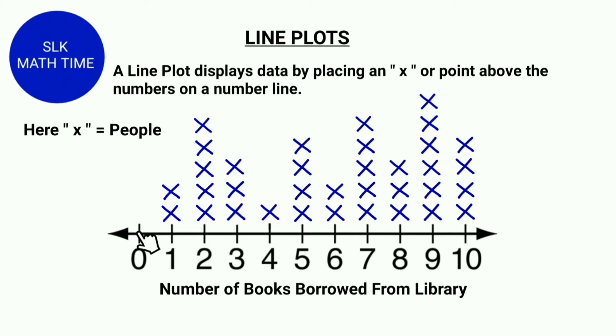Here this line plot represents the number of people who borrowed a number of books from the library. The numbers represent number of books borrowed from the library and the x represents the number of people.